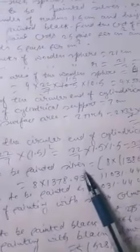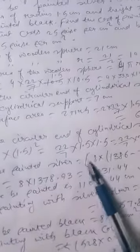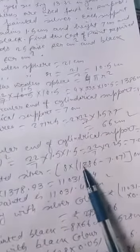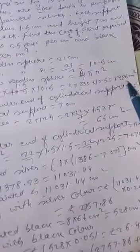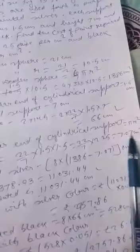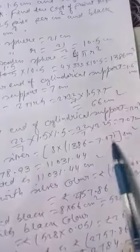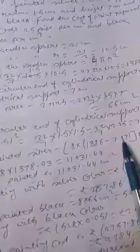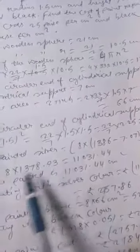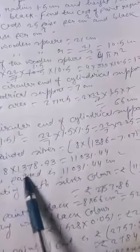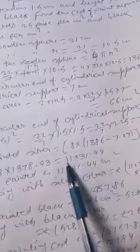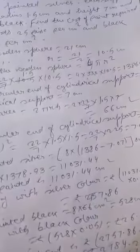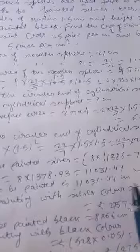The area to be painted silver is equal to 8 into (1386 minus 7.07) cm², because the circular end area of the sphere that rests on the support is subtracted. This gives 8 into 1378.93, and if you multiply 8 by 1378.93, you get 11031.44 cm².